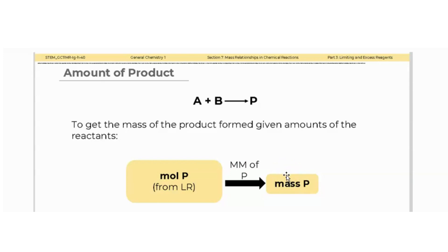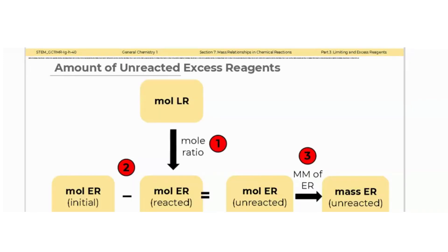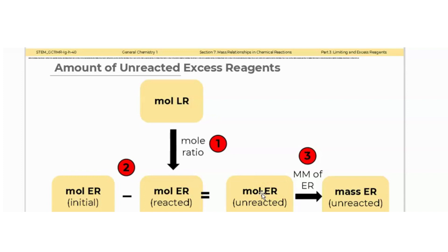To find the amount of excess reagent remaining after the reaction, first convert the number of moles of the limiting reagent to the number of moles of the excess reagent consumed, using the mole ratio from the balanced equation. Then subtract this value from the original number of moles of the excess reagent to obtain the moles of excess reagent remaining. Third, multiply the remaining moles by the molar mass of the excess reagent to determine the mass that remains at the end.